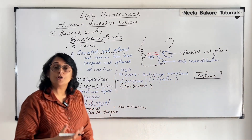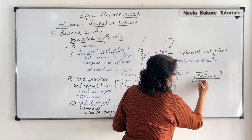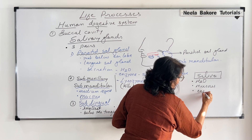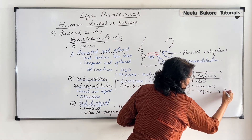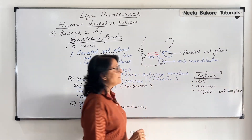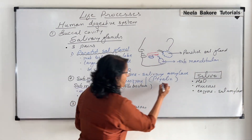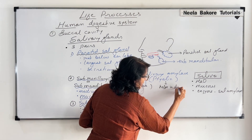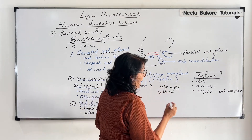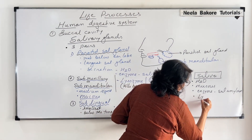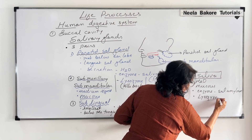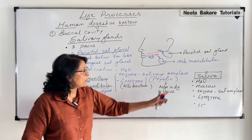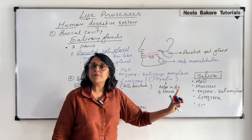The composition of our saliva includes water, mucus, the enzyme salivary amylase which helps in digestion of carbohydrates and starch, lysozyme, and some chloride ions. These chloride ions activate the salivary amylase enzyme.